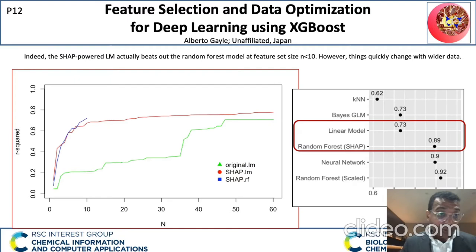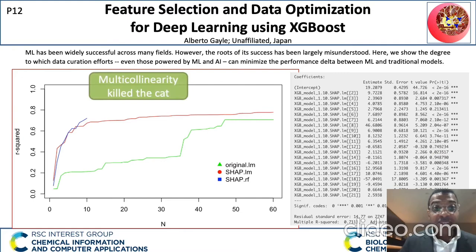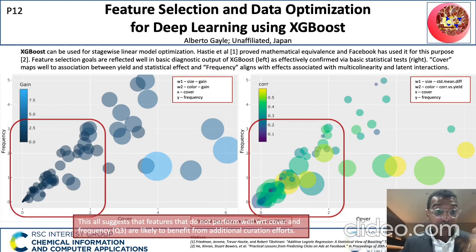The SHAP-powered linear model actually beats out the random forest model for feature sizes less than 10. Machine learning has been widely successful across many fields; however, the roots of its success have been largely misunderstood. Here we show the degree to which data creation efforts, even those powered by machine learning and AI, can minimize the performance delta between machine learning and traditional models. Taken together, this all suggests that features that do not perform well with respect to coverage and frequency are likely to benefit from additional curation efforts.